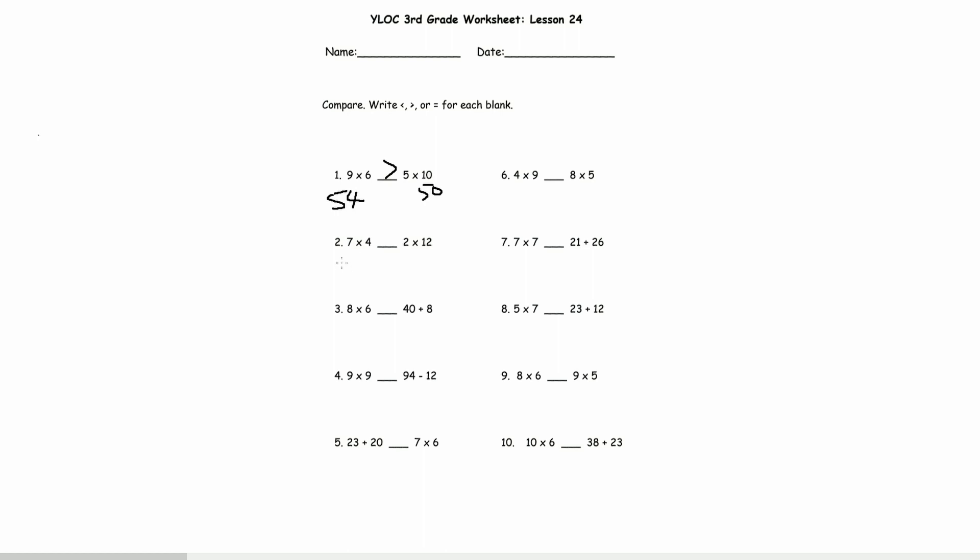7 times 4, that is 28. And 2, there's 2 of 12, so 12 plus 12 is 24. 28 is bigger by 4, so we're going to put that.